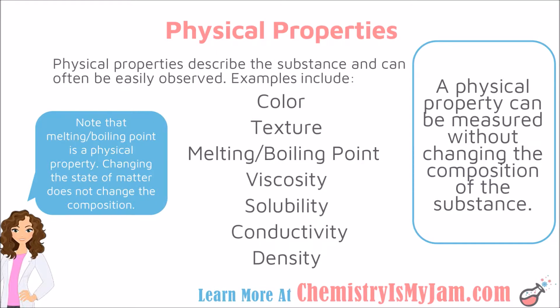Physical properties are different. Physical properties describe the substance and can often be easily observed without changing the substance. A physical property can be measured without changing the composition of the substance. Some examples include color, texture, melting and boiling point, viscosity, solubility, conductivity, and density.